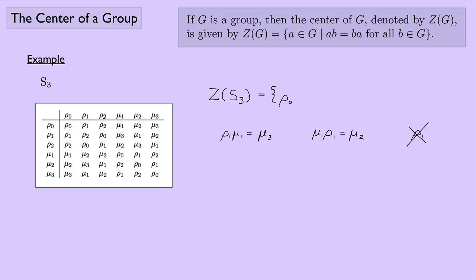How about rho two? Let's check if rho two commutes with mu one. Rho two times mu one gives us mu two. And mu one times rho two gives us mu three. They don't match, so rho two is no good.